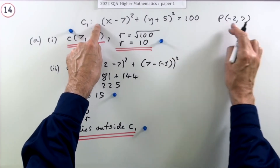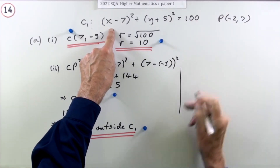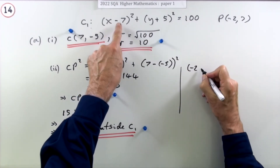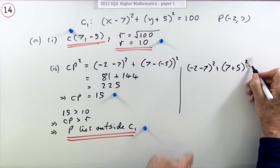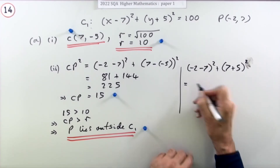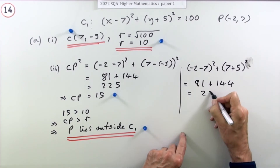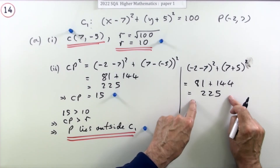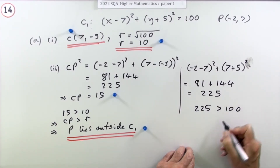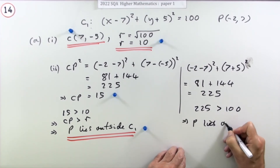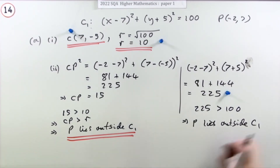The other way is to test the point in the equation. If those coordinates give an answer of 100, P is on the circle; if more than 100, it's outside; if less than 100, it's inside. So feed in x = -2 and y = 7: (-2 - 7)² + (7 + 5)² = 81 + 144 = 225. Since 225 is greater than 100, P lies outside the circle. Getting the 225 is the first mark, and making the conclusion statement is the second mark.